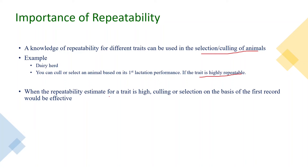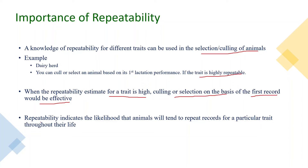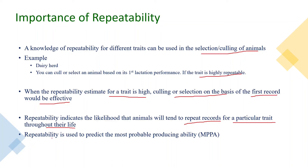When the repeatability estimate for a trait is high, culling or selection based on the first record will be more effective. Repeatability also indicates the likelihood that animals will tend to repeat their records for a particular trait throughout their life. Additionally, repeatability can be used to predict the Most Probable Producing Ability (MPPA), on the basis of which animals can be selected or culled for breeding purposes.